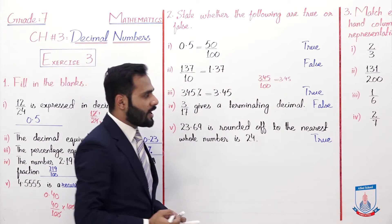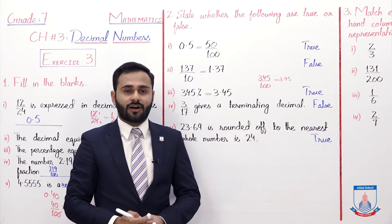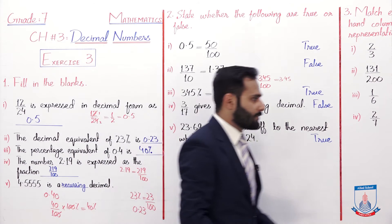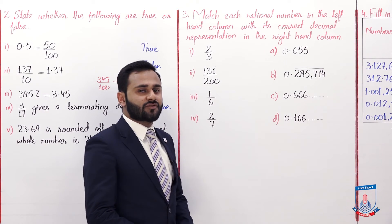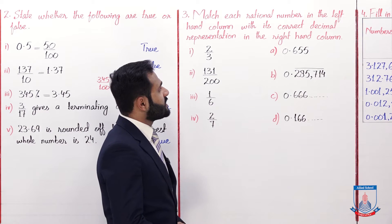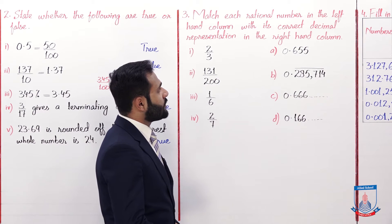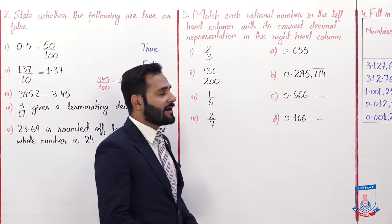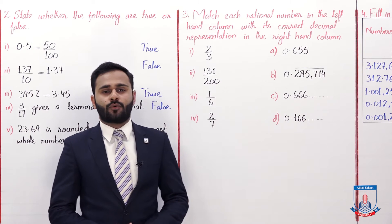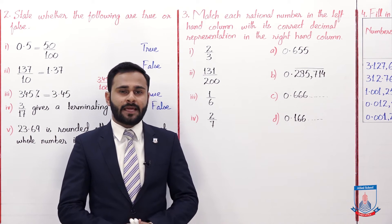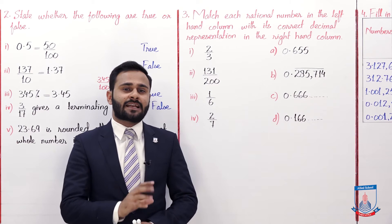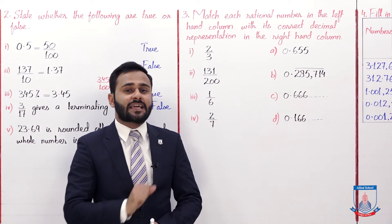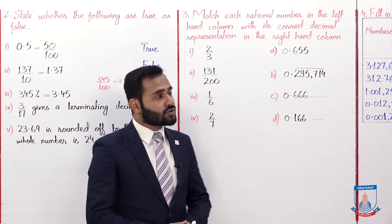I hope Question 2 is also understood. Now Question 3: Match each rational number in the left-hand column with its correct decimal representation in the right-hand column. Two columns are given — match each fraction to its decimal equivalent.